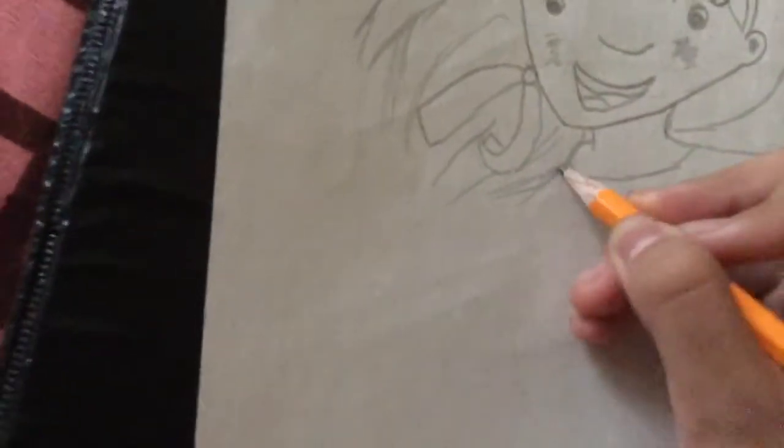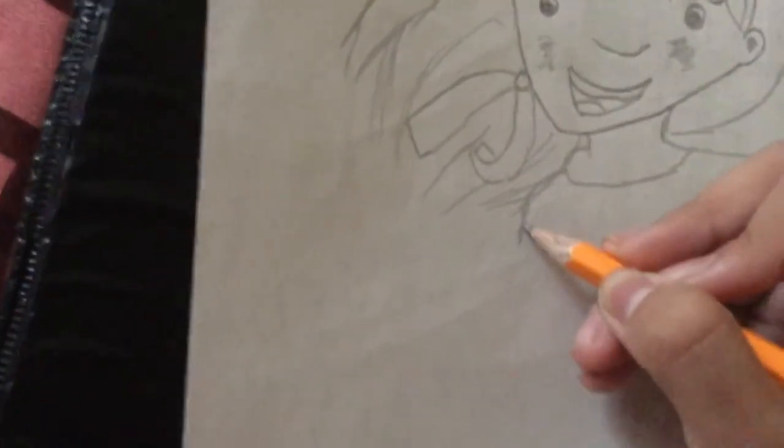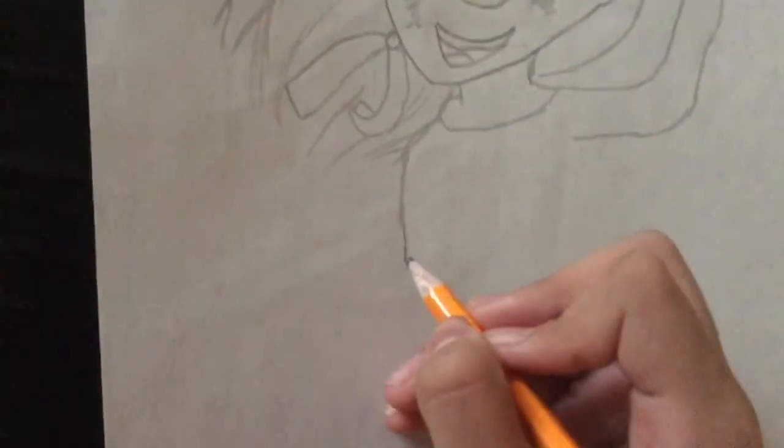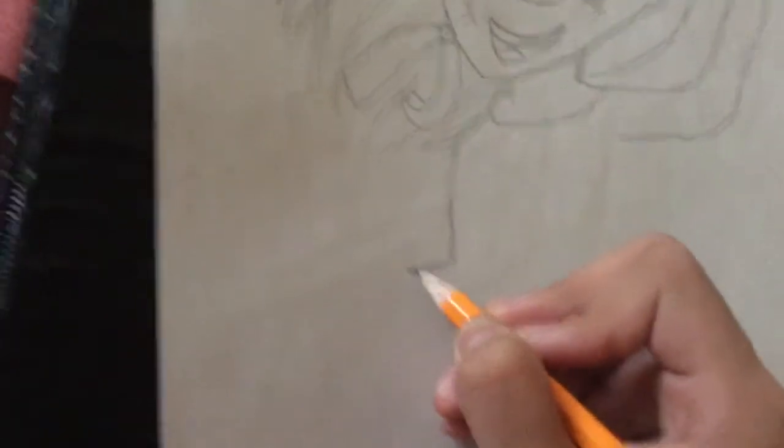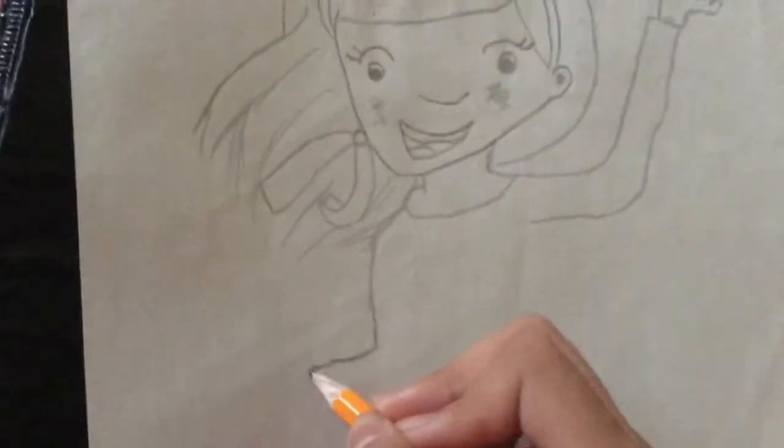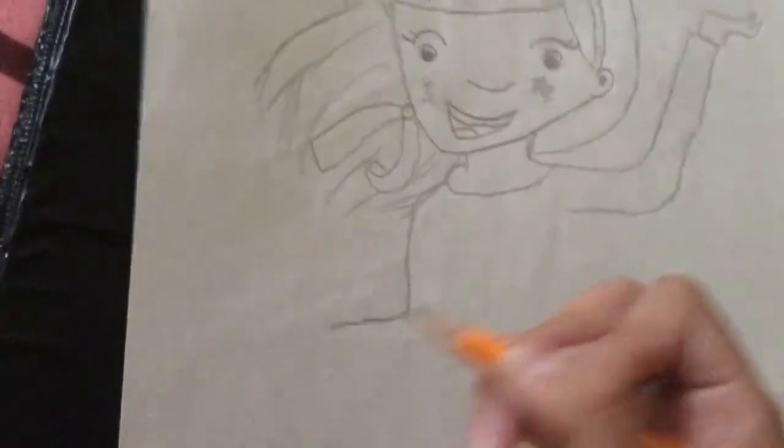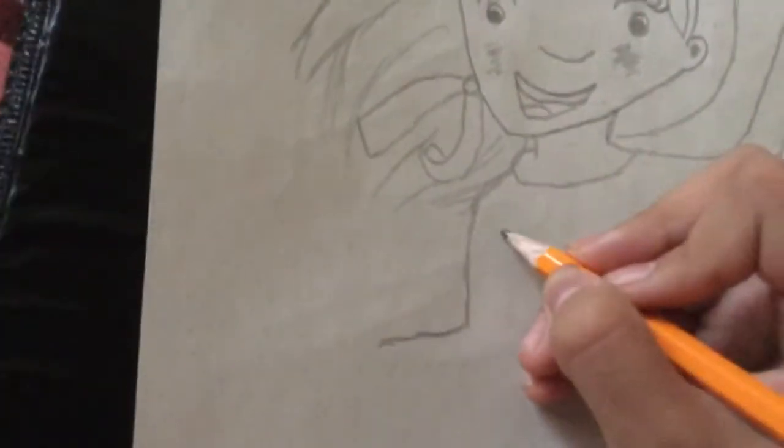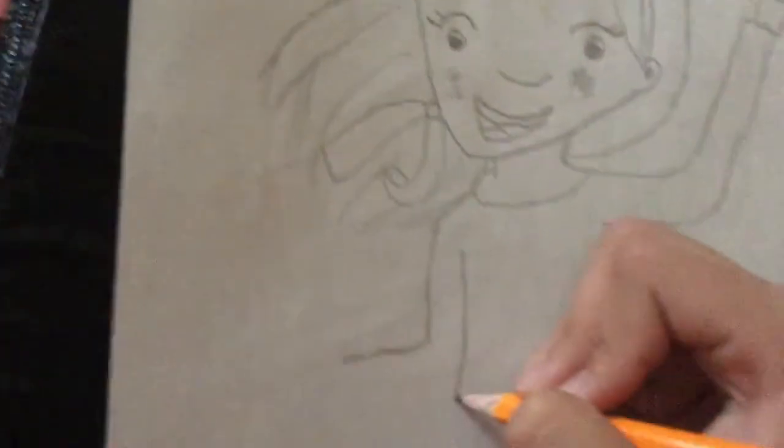So this is her arm, it's going down and then it goes to the side because she's petting her like dogs, yeah. And then her dress goes like that.